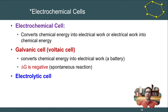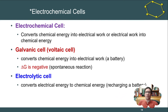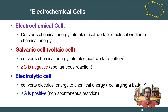In some cases, depending on the system, we can have an electrolytic cell, where we're converting electrical energy to chemical energy — in this case recharging a battery. The Gibbs energy is positive; it's non-spontaneous, and we have to apply an external energy source, typically a voltage applied to our system.